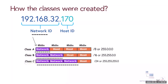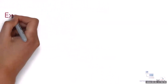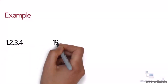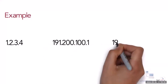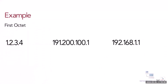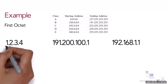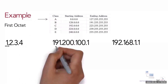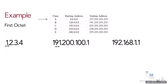Class A was created for a small number of networks with a large number of hosts, while Class C was created for numerous networks with a small number of hosts. To find the class of an IP address, simply look at the first octet. For example: 1.2.3.4 is Class A (first octet 1–127), 191.200.100.1 is Class B (128–191), and 192.168.1.1 is Class C (192–223).